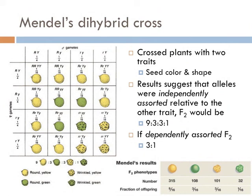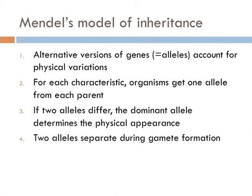To sum up all that Mendel found in his life work: he found that there are alternate versions of a gene, which became known as alleles, that account for the physical variation in organisms. He also determined that organisms get a single allele from each parent. Furthermore, if two alleles differ — that is, if the genus is heterozygous — then the dominant allele determines the physical appearance. And lastly, he found that the two alleles separate during the formation of gametes. Today, we know this as meiosis.